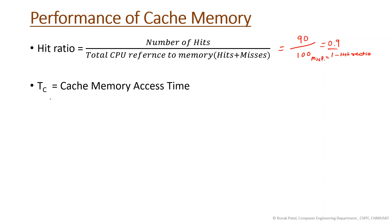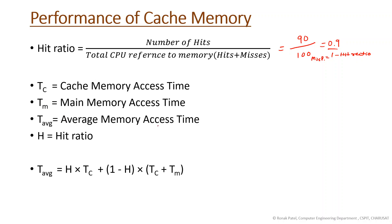Now, before going to the equation for average memory access time by the CPU, we need to understand some terminology. Tc is the cache memory access time — suppose it is 100 nanoseconds. Tm is the main memory access time — assume it is 1000 nanoseconds. We want to find the average memory access time. Let's define the equation for this.